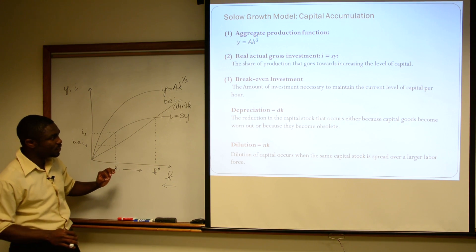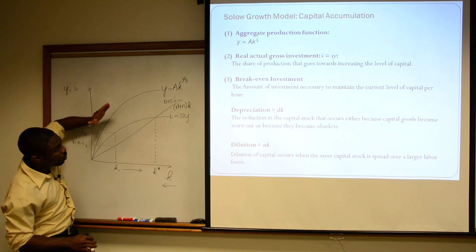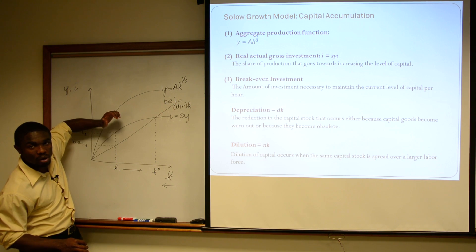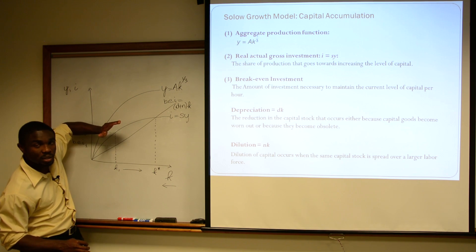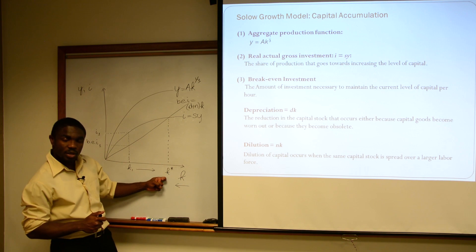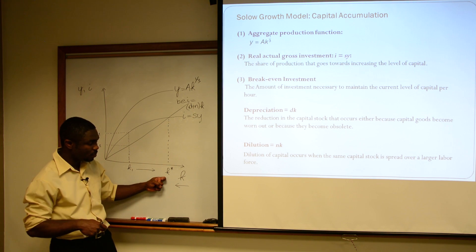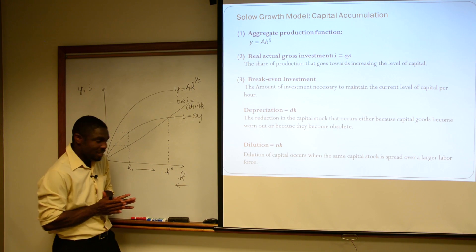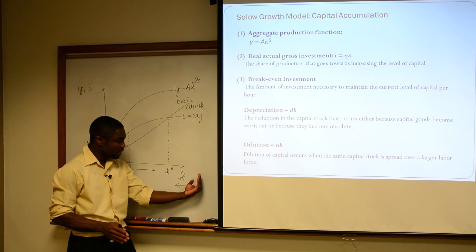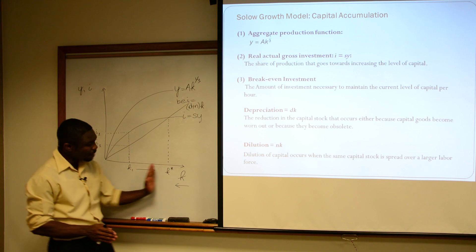The main reason for this result is that our production function exhibits diminishing marginal returns to capital. So in summary, our K star is our steady state capital — it's the equilibrium, that's where the model tends towards. If we're to the right of K star, capital will fall; if we're to the left, capital will increase.